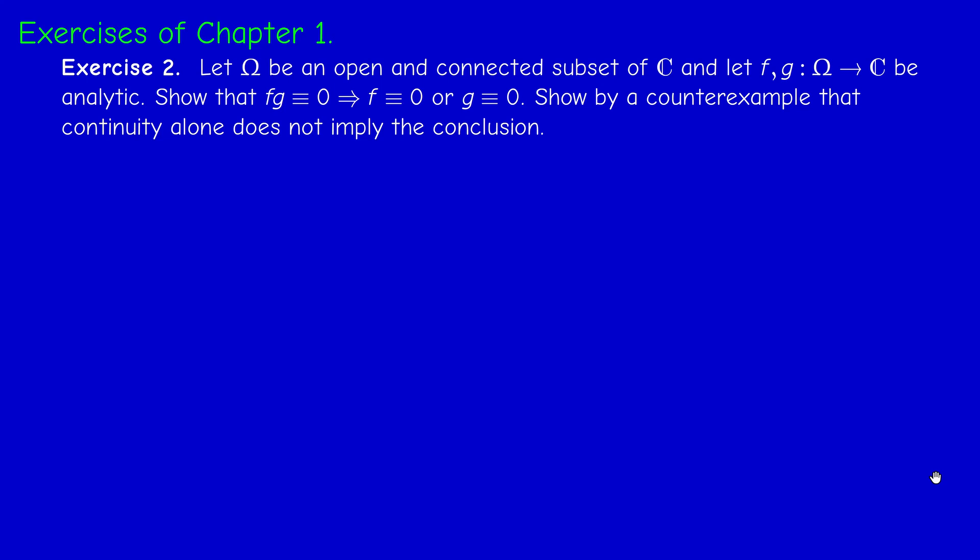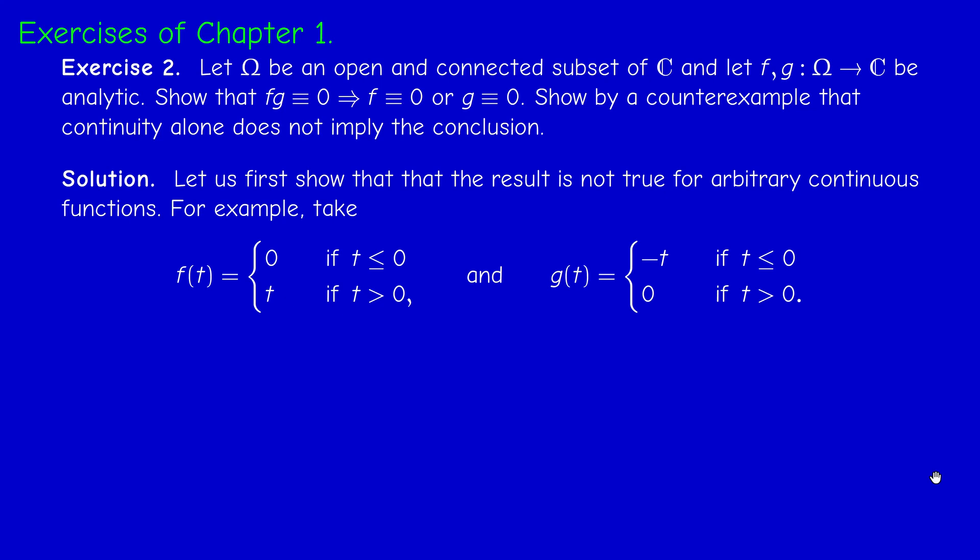So let us start by giving a counterexample. And to simplify, I gave an example of functions defined on R, but of course you can give other examples for functions of a complex variable. So take, for example, the function which is zero for t negative, and t if t is positive, and take its symmetric with respect to the y-axis, call it G.